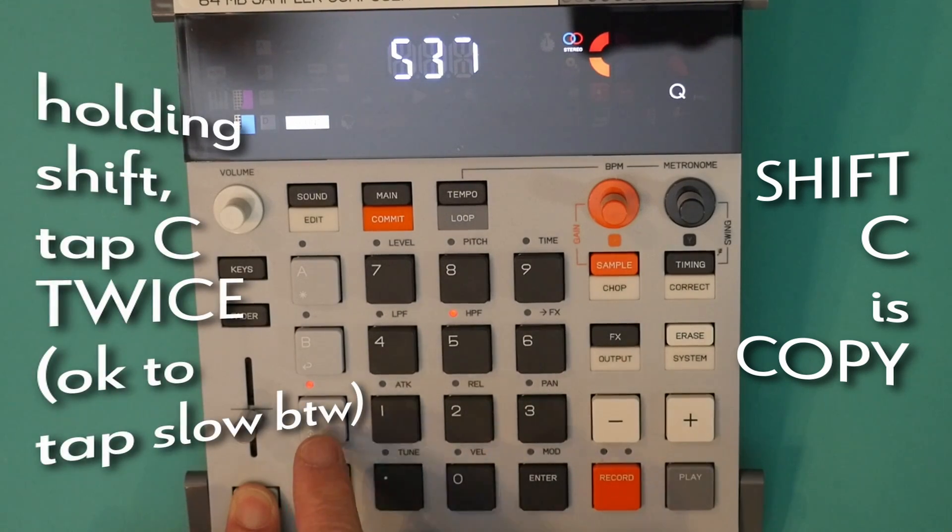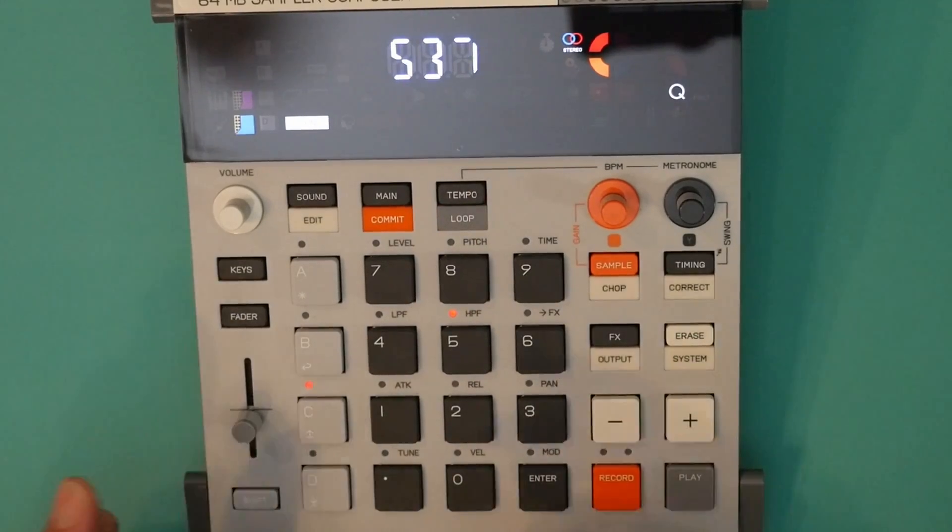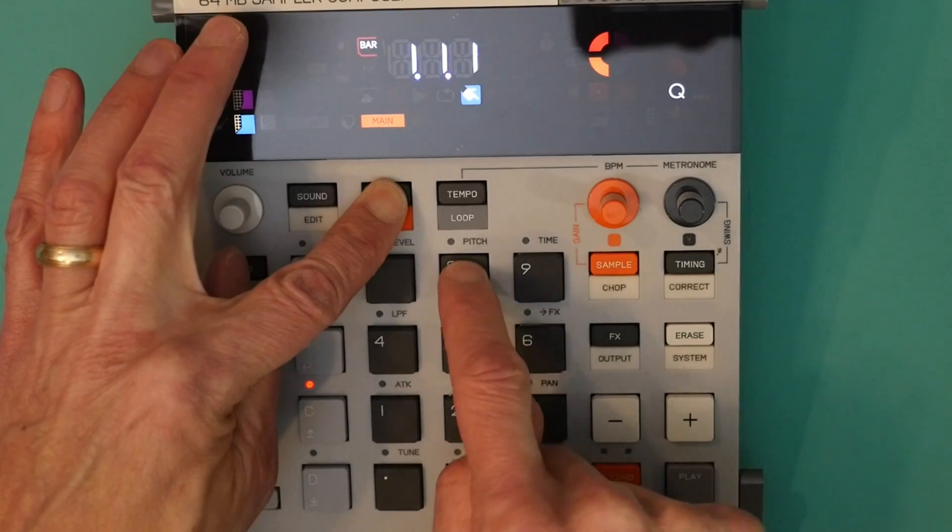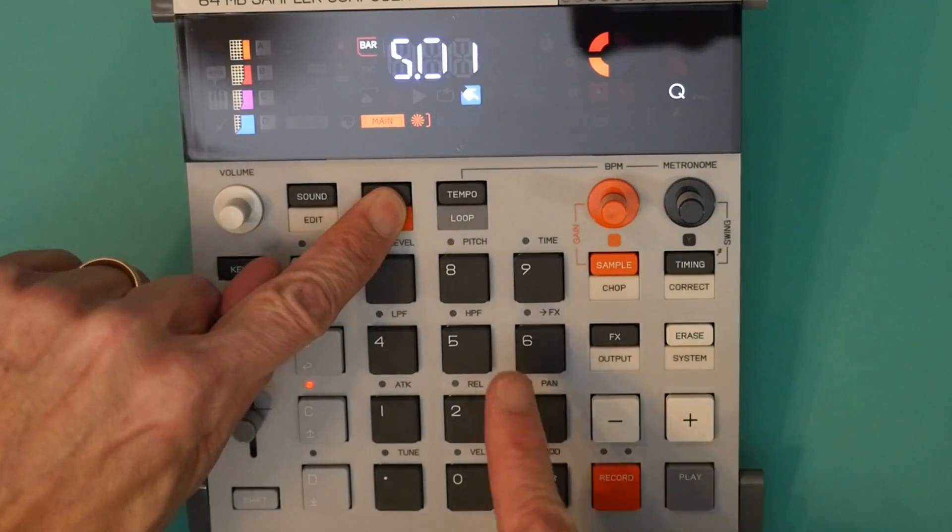I hold shift and hit C. I'm going to hit C twice. The first time it copies pad, but I still hold shift down. And the second time it copies the whole group. Now that group is copied to memory. I go back to project 8, hold main, hold 8. Now I'm in project 8. We'll check.